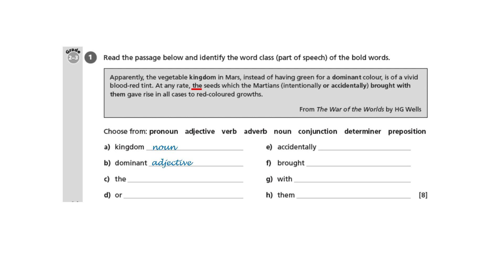Next, 'the seeds': 'the' is a determiner — it determines what kind of word is going to follow. It doesn't tell us very much about what words can follow, but it's a determiner. Next we have 'or', between the words 'intentionally' and 'accidentally'. It tells us that there are options, so it's a conjunction — it joins these two words.